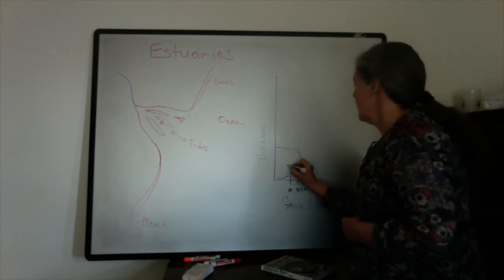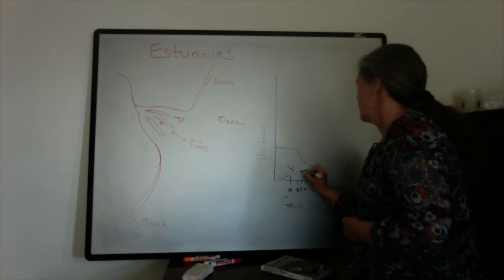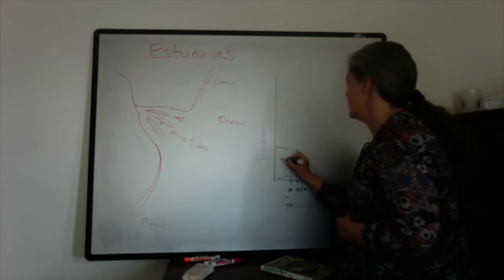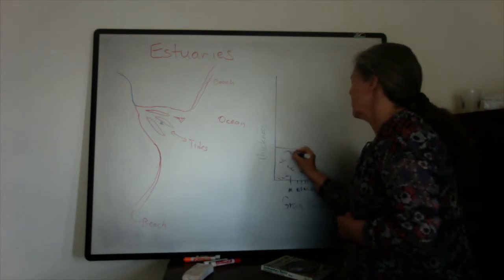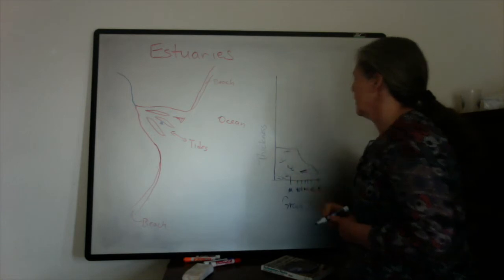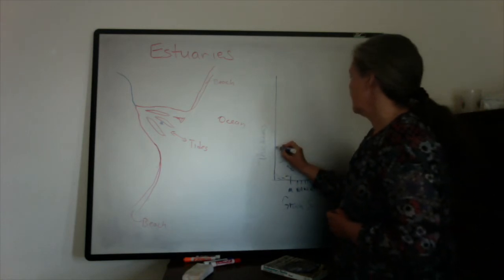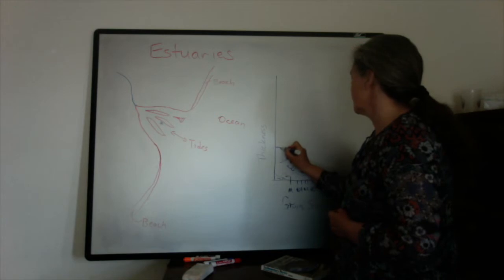And then we can have trough cross stratification, maybe some upper planar cross lamination here, some trough cross stratification, and then at the top of the point bar it's often rippled.